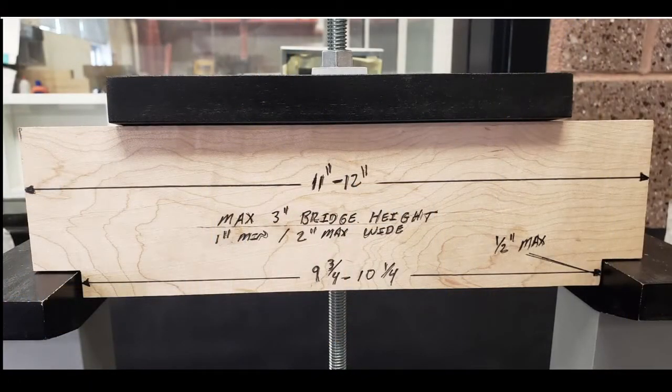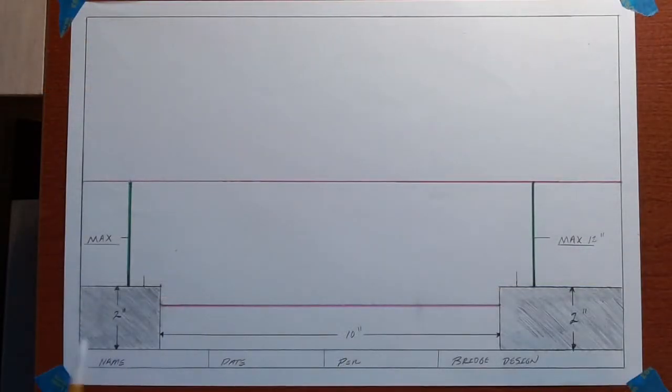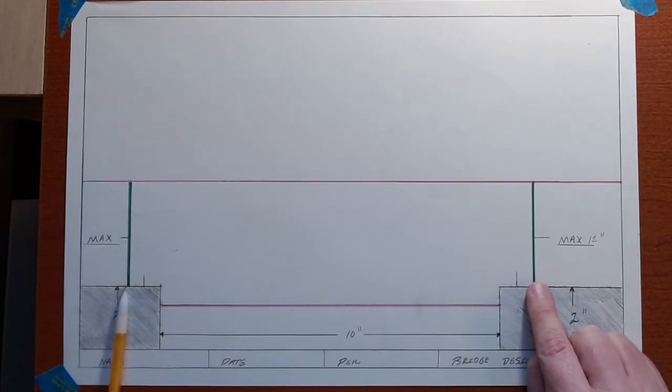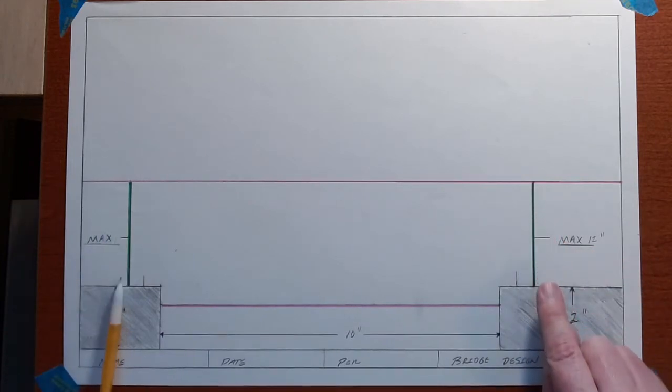Next thing - notice it says 11 to 12 inches long. That's how long your bridge is going to be total. What I've done is marked out so I don't go outside my boundaries. I came in here and measured out the maximum, which is 12 inches.